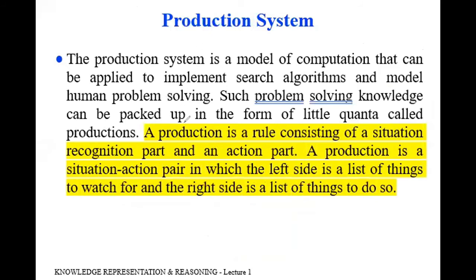Going back to the definition: a production is a rule consisting of a situation, a recognition part, and an action part. Production is a situation-action pair, in which the left side is a list of things to watch — which we observe and act upon — and the right side is a list of things to do.